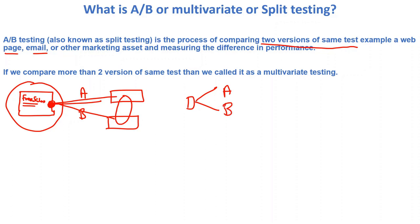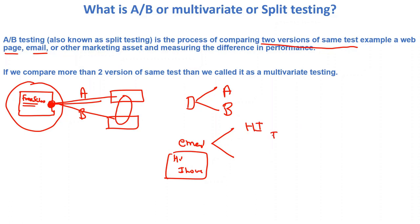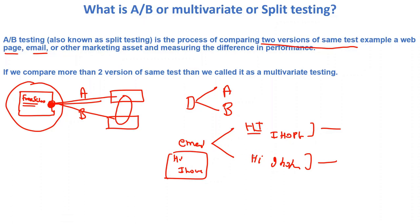In A/B testing, we take two different versions of the same test. For example, let's say this is your email. You will create two different versions of the same email — like version A has 'HI, I HOPE' all in caps, and version B has 'hi, i hope' in lowercase. You send each version to a different set of users and get analysis on how these emails are performing.